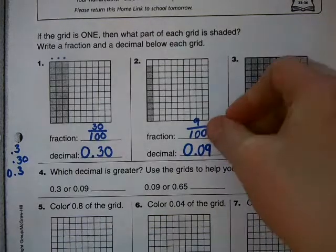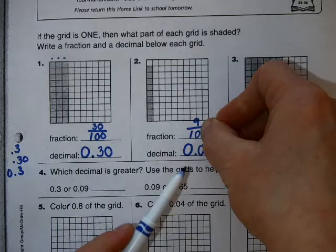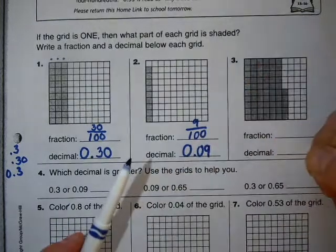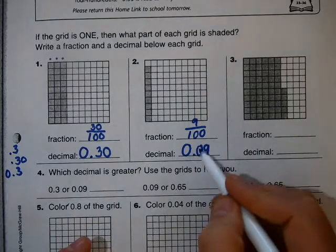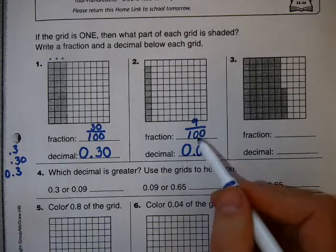If this was 9 tenths, you could just write 0.9. But because this is 9 hundredths, you have to write 0.09, which is why it's really important to read the number. Oh okay, 9 hundredths. I see this is 9 hundredths,